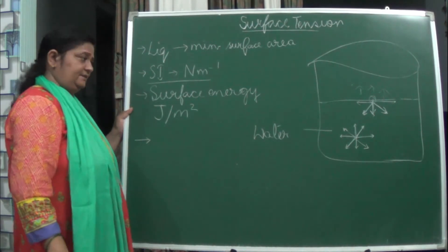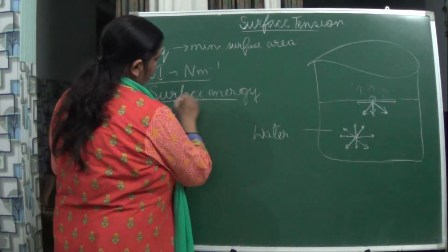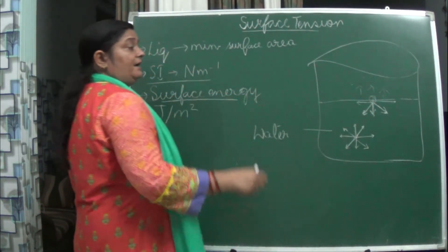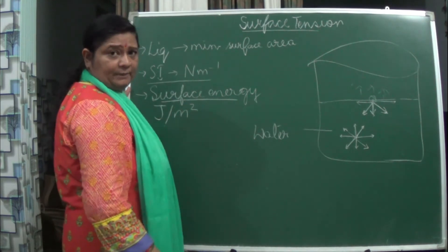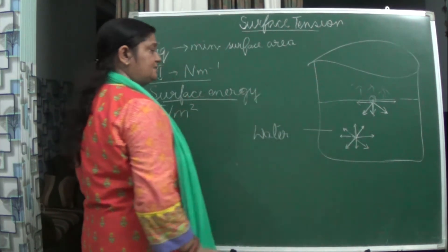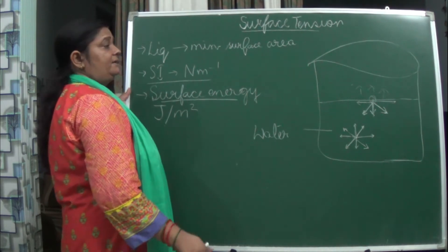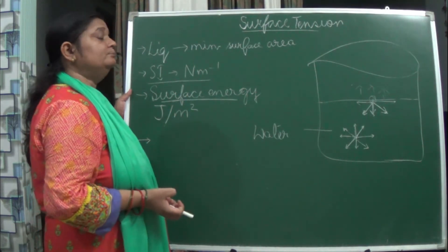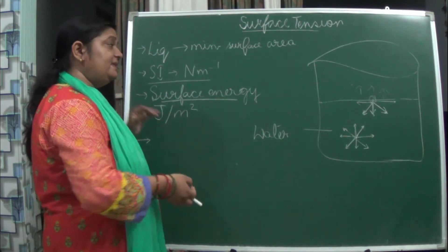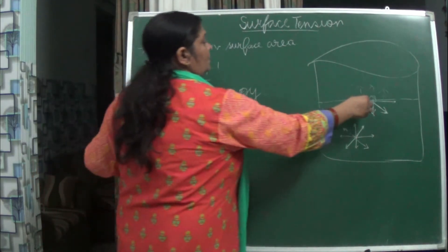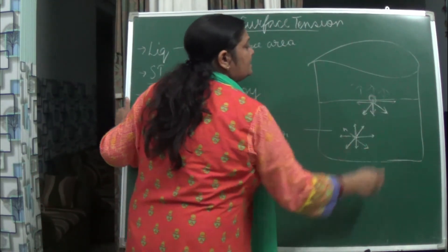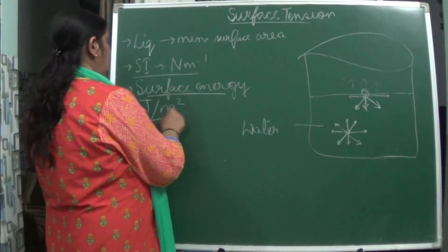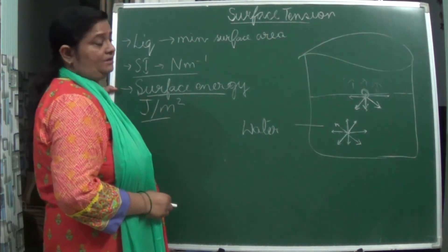What is surface energy? The energy at the surface is unstable while energy in the bulk is stable. The surface energy tries to attain stability. This energy is called surface energy, and its unit is joule per meter square.